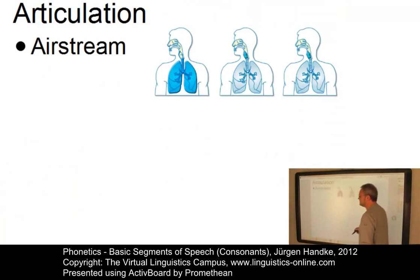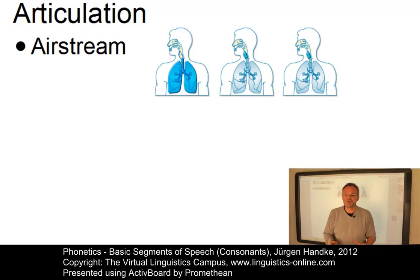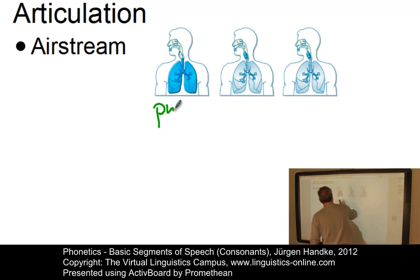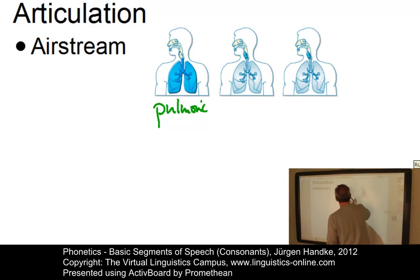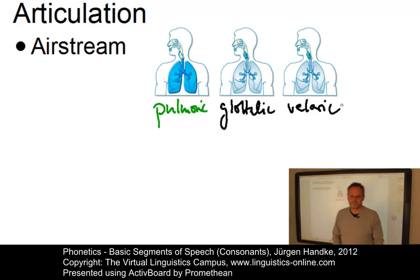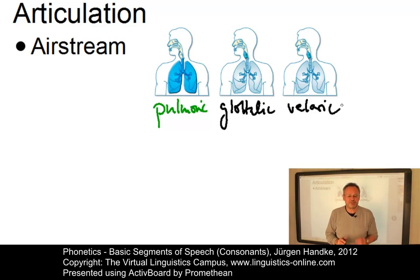A further criterion concerns the type of airstream involved. In this unit, we will concentrate on those consonants that are produced with a pulmonic airstream. We will not look at consonants produced with a glottalic or with a velaric airstream. These types of airstreams will be discussed separately.